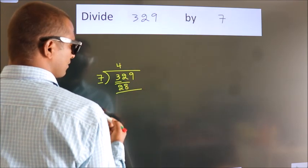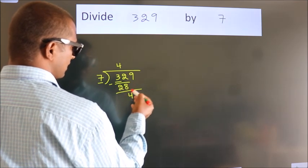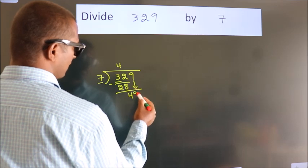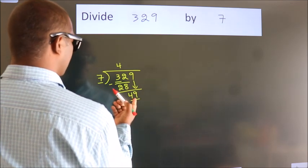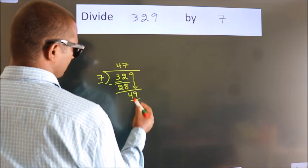Now we should subtract. We get 4. After this, bring down the beside number. So 9 down. So 49. When do we get 49 in the 7 table? 7 sevens, 49.